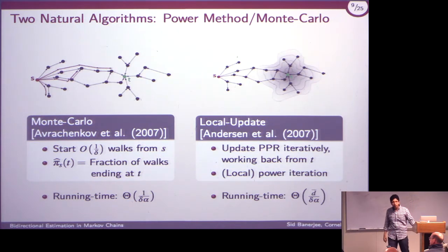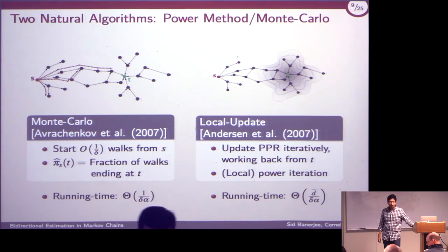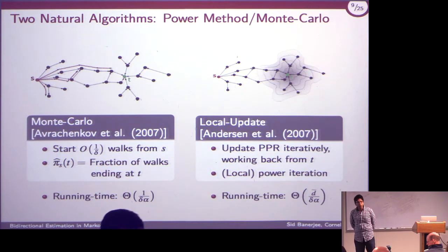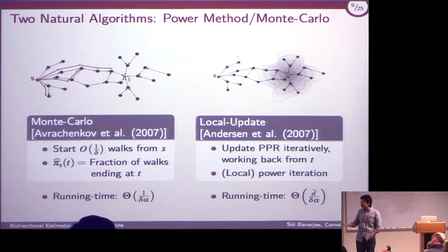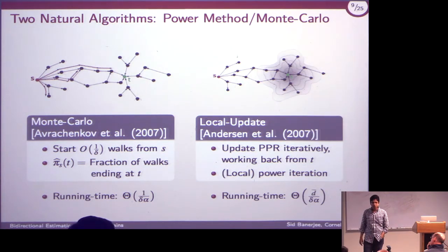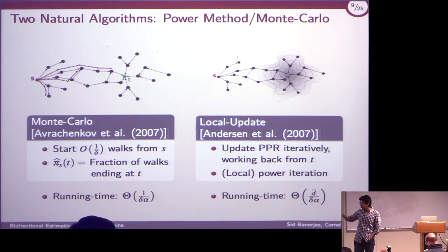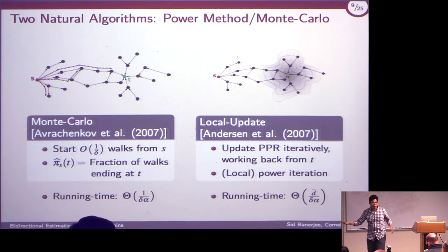Regarding the alpha parameter: alpha models how self-centered you want the search to be. In practical systems, alpha is something like 0.2 — just a fixed constant. It's not going to change with population. I'll argue that delta has to be on the order of one over the total number of nodes for anything meaningful, so the dependence on n is much more important than dependence on alpha.